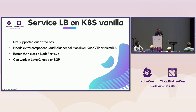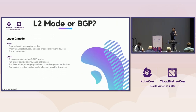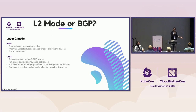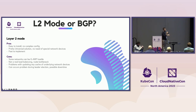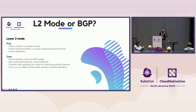Tools like KUBE-VIP or MetalLB can work in two different modes: layer 2 mode or BGP mode. Our cluster is a Kubernetes vanilla cluster running on-premises in a vSphere environment, with nodes as virtual machines running Ubuntu Linux. The layer 2 mode is easy to install—no complex configs, a pretty universal solution, no special network devices or fancy routers needed—and rapid to implement.